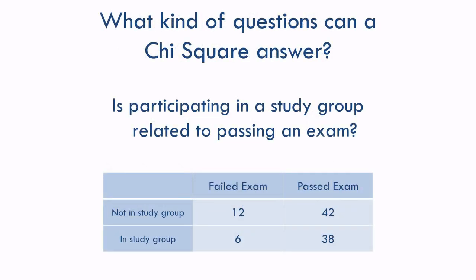You can do chi-squares with more than just one variable, though. You could look at whether participating in a study group is related to passing an exam, and count the number of students that fall into each category. Here we have two variables — being in a study group and passing an exam — each with two levels. We call this a two-by-two design.